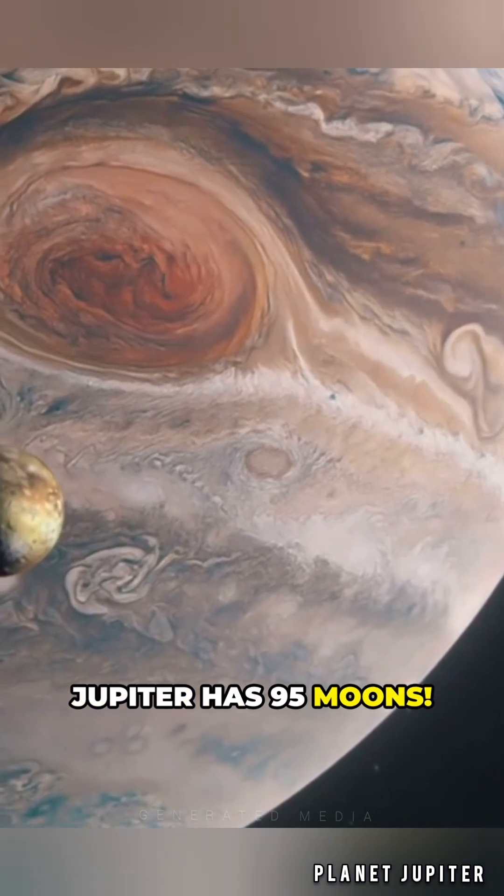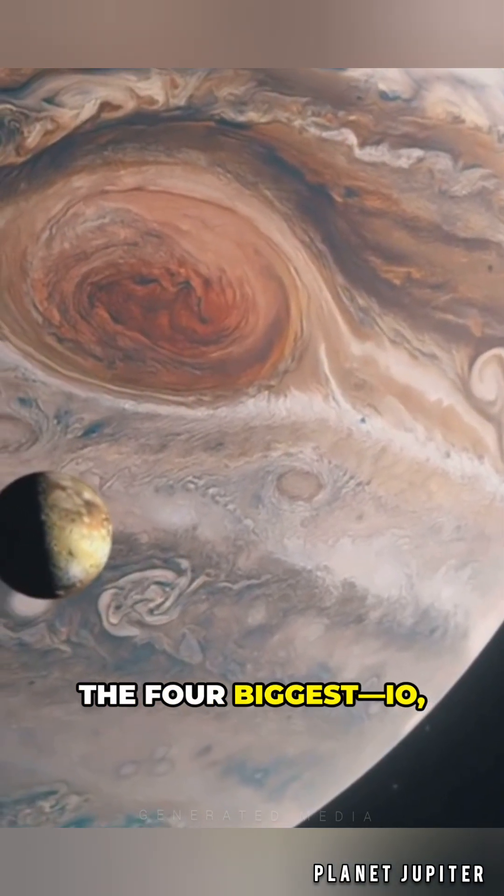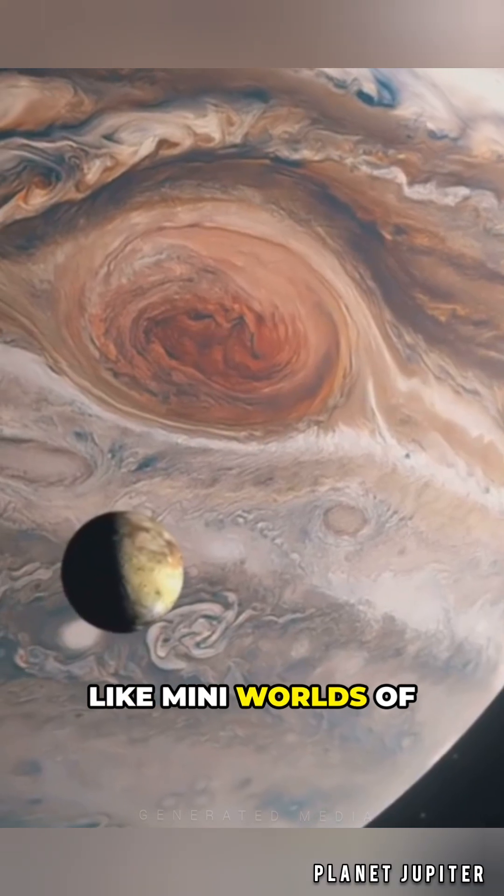And guess what? Jupiter has 95 moons! The four biggest, Io, Europa, Ganymede, and Callisto, are like mini-worlds of their own!